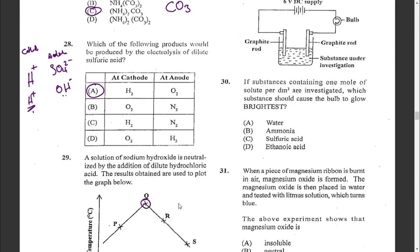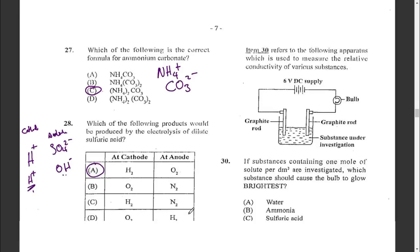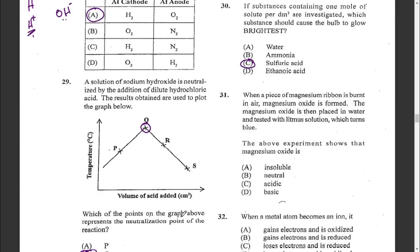Item thirty refers to apparatus used to measure the relative conductivity of various substances containing one mole of solute per dm³. Which substance should cause the bulb to glow the brightest? The strongest electrolyte would be sulfuric acid. The answer is C.